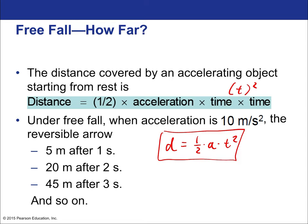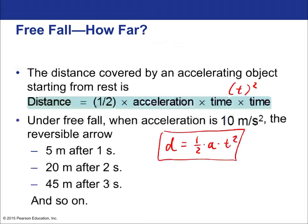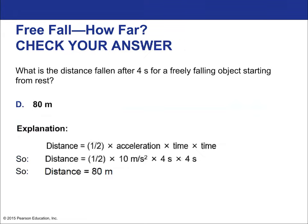In the real world, you reach terminal velocity on Earth, so at some point you stop accelerating. But in a vacuum or on a planet with very little atmosphere, you continue to accelerate. Practice problem: what is the distance fallen after 4 seconds for a freely falling object starting from rest? Using d = ½ × a × t², the answer is 80 meters.